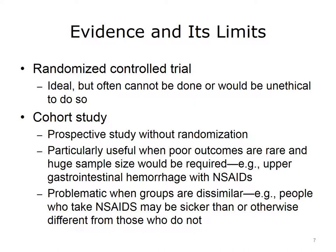A cohort study is a prospective study where we take a group of patients who get exposed to something and follow them forward in time, but don't randomize them. Cohort studies can be useful when poor outcomes are rare, such that a huge sample size would be required. For example, upper gastrointestinal hemorrhage from NSAIDs such as Motrin and Naproxen is relatively rare. So a cohort study can help when these poor outcomes are rare. Cohort studies are problematic when groups aren't similar — those who take the NSAID are more likely to have ongoing medical problems, so we don't get the benefit of randomization.